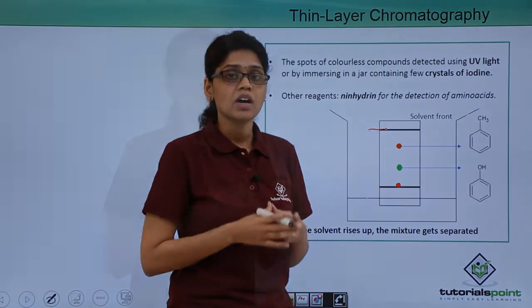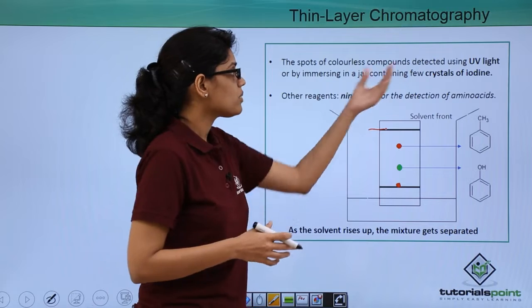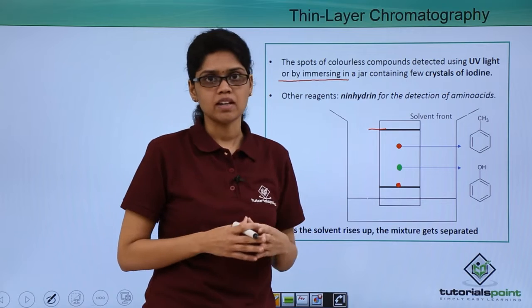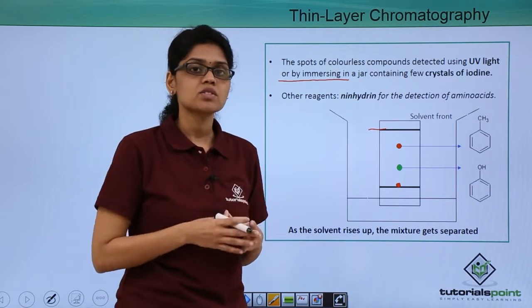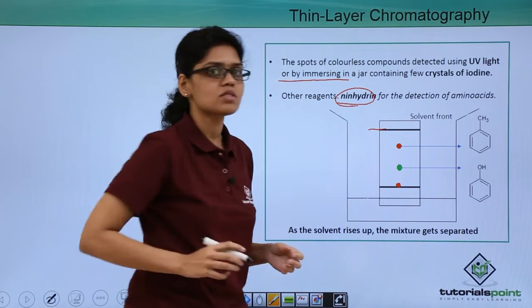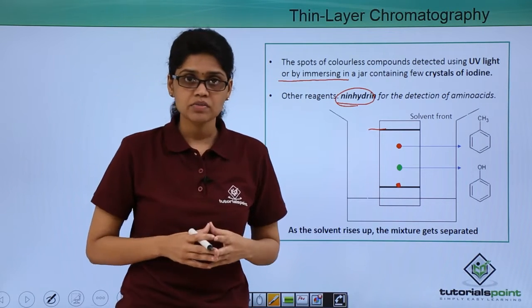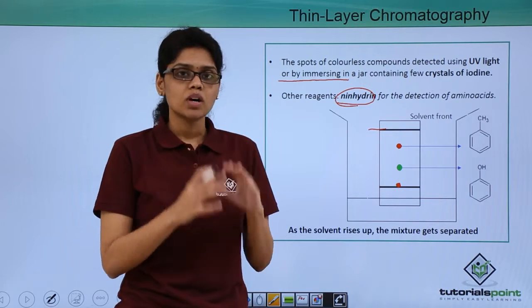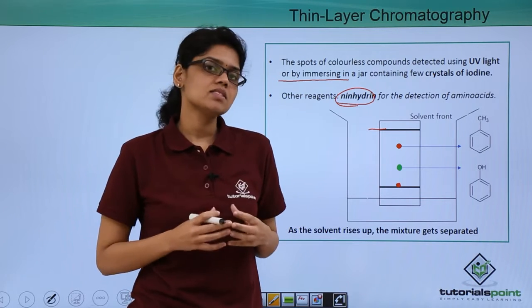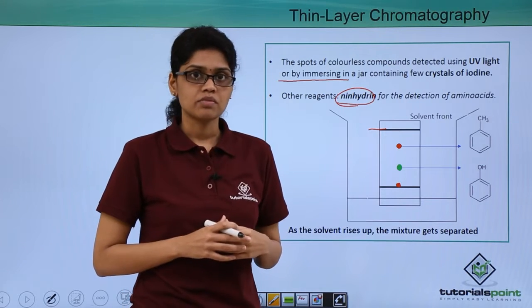This is how we show the difference in affinity of the two compounds with respect to the adsorbent in a typical TLC plate. When we have colourless spots, the compounds can be detected using a UV lamp or by placing the plate under UV light, or by immersing it in a jar containing crystals of iodine. In special cases like the separation of amino acids, we use special spray reagents like ninhydrin to detect the separated spots. This completes thin layer chromatography, and I hope the basic differences between column chromatography and thin layer chromatography, and adsorption chromatography as a whole, are clear.